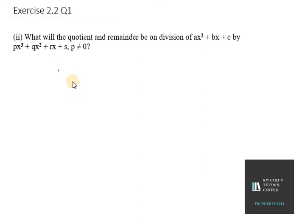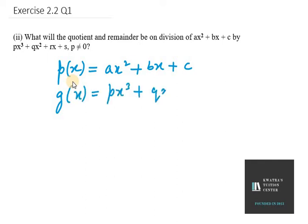So in this case, what we are given is b(x), that is dividend Ax² + Bx + C, and we are given the divisor, that is g(x), g(x) equals Px³ + Qx² + Rx + S.